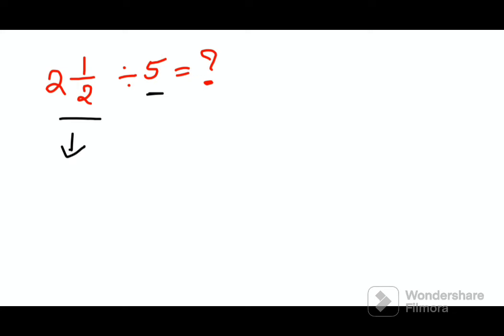First, you convert the mixed fraction into an improper fraction. What you do is multiply the denominator with the integer part, and then whatever answer you get, you add the numerator to it.